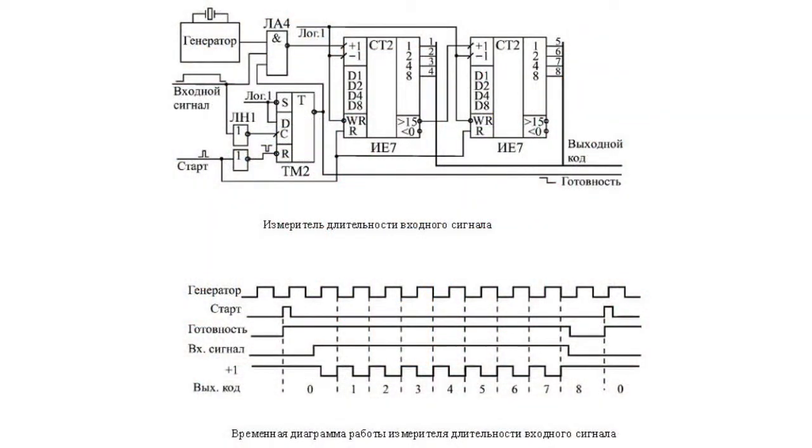Counters are also popular in different input signal period meters. They count the impulses of a quartz clock oscillator within the duration of an input signal. After the input signal stops, the counter retains a code. The code is proportional to the period of the signal.